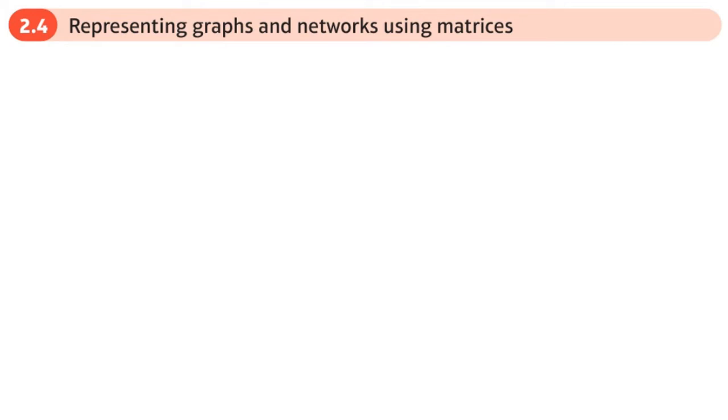This is the fourth section of chapter two on graphs and networks, and here we're going to be looking at how we can represent graphs and networks using matrices. There are two types of matrices that we can use: one is called an adjacency matrix and the other a distance matrix.